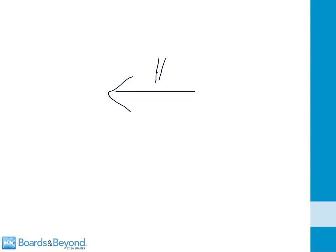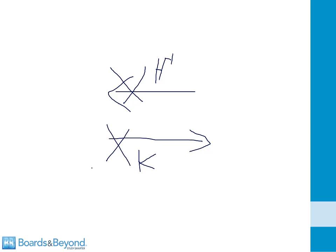In the distal nephron, when acid goes out into the lumen of the nephron — in other words into the urine — potassium is reabsorbed. What this means is that if there's a defect in acidification of the urine, there will also be a defect in reabsorption of potassium. That leads to potassium going out in the urine and hypokalemia.